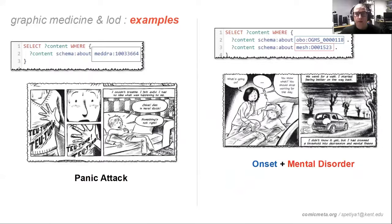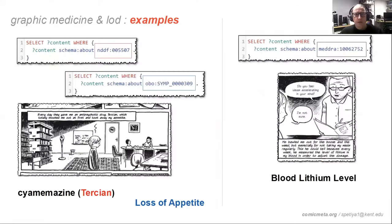Examples of queries this approach enables include: a panic attack illustration — a great depiction of a common symptom; a compound query combining both onset and mental disorder; a query for a specific medication or side effect, including the antipsychotic tercian, which is not translated from French to English in the text but whose entry in the national drug data file contains both terms in both languages; and blood lithium level — a more specific bipolar disorder term showing differing patient and provider perspectives of the same scene. These differing reader perspectives hint at challenges in representing different usages adequately in the metadata.